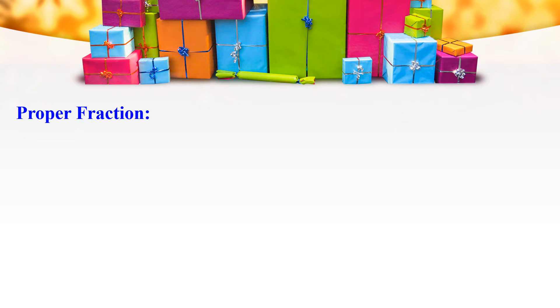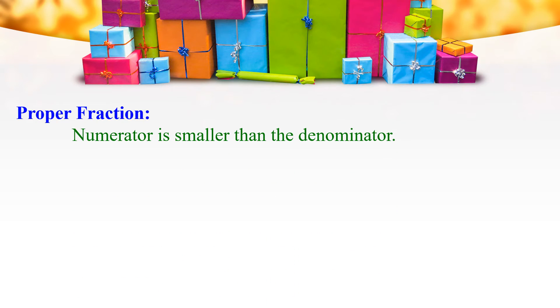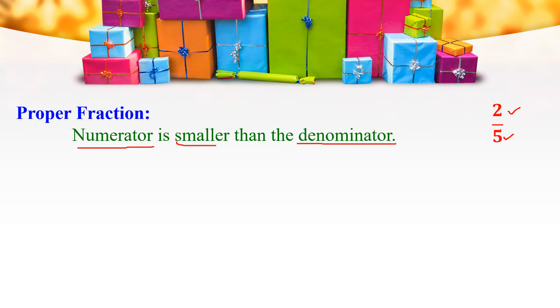Let us first learn the Types of Fraction. The first type is called a Proper Fraction. When the numerator is smaller than the denominator in a fraction, then the fraction is said to be a proper fraction. For example, 2 by 5. Here, 2 is the numerator and 5 is the denominator, and 2 is less than 5. So 2 by 5 is a proper fraction.